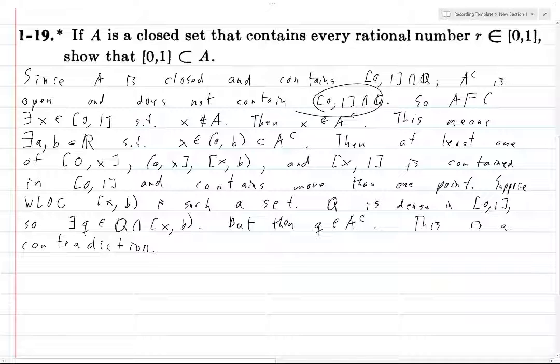So hence, there does not exist an X in [0,1] such that X is not in A. So i.e., for all X in [0,1], X is in A, i.e., [0,1] is contained in A. And this completes the proof.